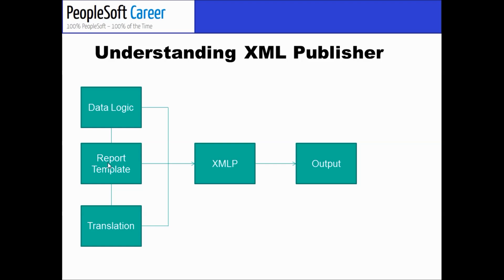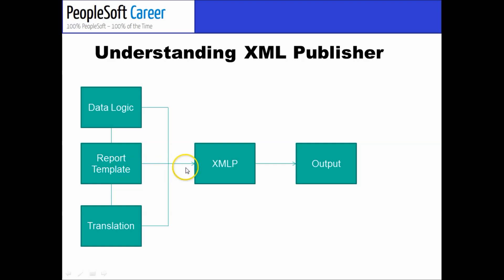You format the report — put in text, images, logos, whatever you want — and save that template. Then you have a translation layer if you have multiple languages. Essentially, XML Publisher, the Java-based application already integrated into PeopleSoft, takes all three of these layers and merges them together to produce a single output report. That output comes out as a nicely formatted PDF, Excel, HTML, or whatever you decided during the design of your template.